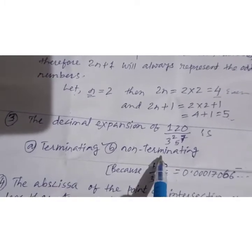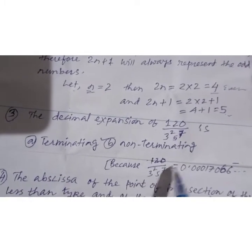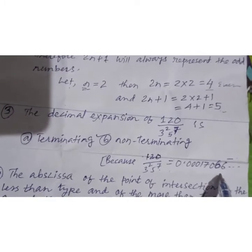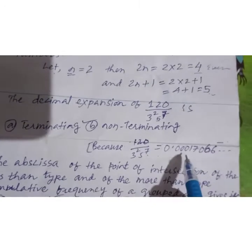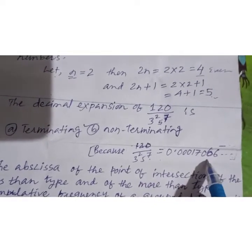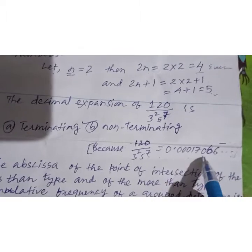Next: the decimal expansion of 120 divided by 3² into 5 to the power 7. Is it terminating or non-terminating? If an option like non-terminating non-repeating is given, that would be non-terminating, meaning the same number repeats again and again. The solution is worked out here for better understanding.